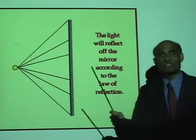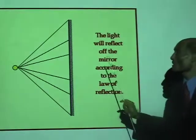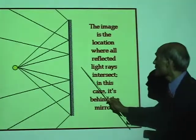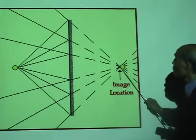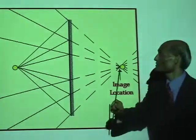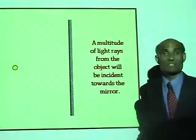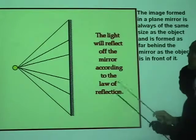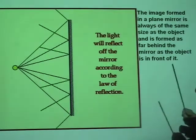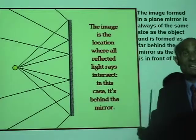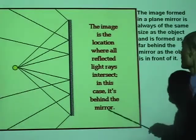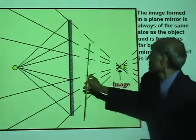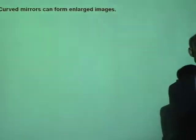What are some of the characteristics of the image? The distance of the object from the mirror equals the distance of the image — this distance equals that distance. That's a characteristic of the image formed in a plane mirror. The image formed in a plane mirror is always of the same size as the object, and it is formed behind the mirror as far behind as the object is in front of it.